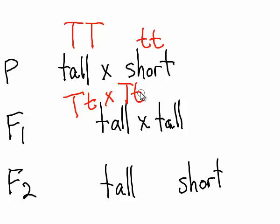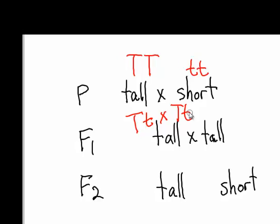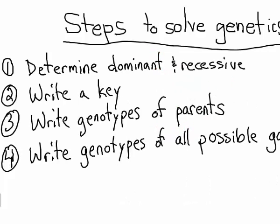We look at our steps for solving a genetics problem. We've already determined what's dominant and recessive. We've already written a key. We have the genotypes of our new parents. They're both big T, little t. And we're going to write the genotypes of all their possible gametes.